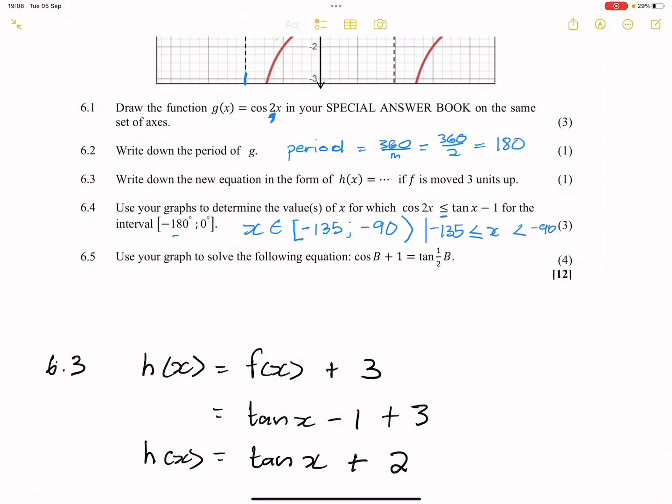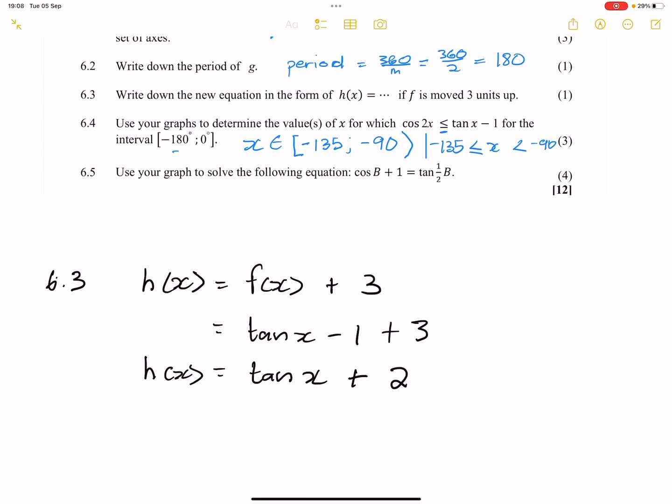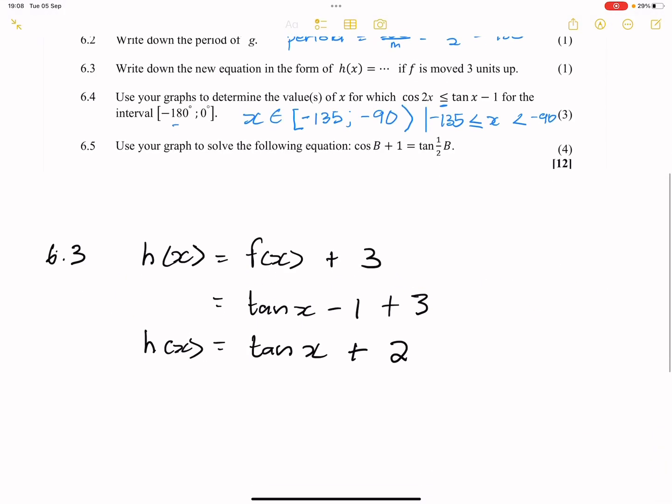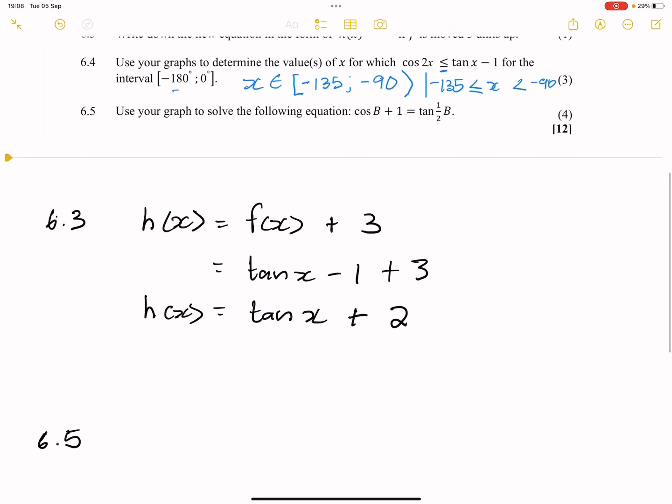Let's get to the last part of this. They say use your graph to solve the following equation. Now, note they said use the graph, so please don't go into long-winded answers and trying to prove identities and so on. All that we're simply going to do is we're going to take the graph that we have. Now, how can we express this, what we are given there, in terms of the graphs that we already have?